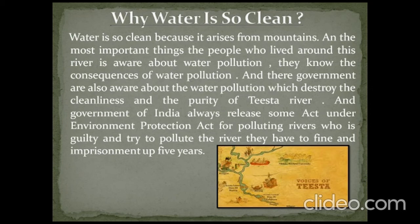The water of the Teesta River is clean because it arises from mountains, and the people who live around this river are aware about water pollution. They know the consequences of water pollution, and the government is also aware about the water pollution that destroys the cleanliness and purity of the Teesta River. The Government of India has released acts under the Environment Protection Act for polluting rivers — those found guilty can be fined and imprisoned for up to 5 years.